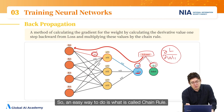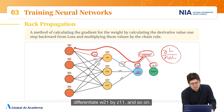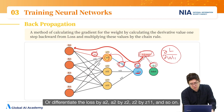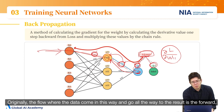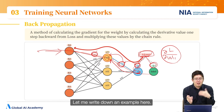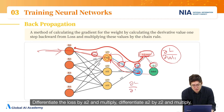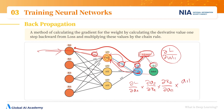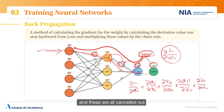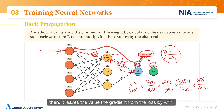An easy way to do it is what is called the chain rule. Differentiate the loss by a2, differentiate a2 by w21, differentiate w21 by z11, and so on — or differentiate the loss by a2, a2 by z2, z2 by z11, and so on. We take one step backward each time. The data originally flow forward through the network to the result — that is the forward pass — and the opposite is the backward pass. We differentiate the loss by a2, multiply by a2 by z2, multiply by z2 by z11, multiply by the differentiation of z11 by w11 — and the intermediate terms cancel out, leaving the gradient of the loss with respect to w11.